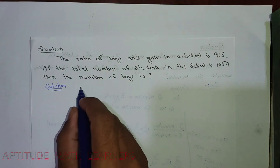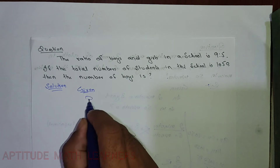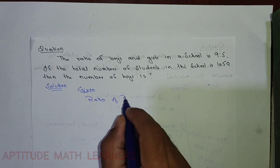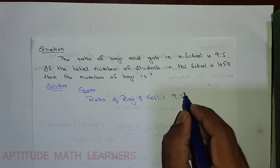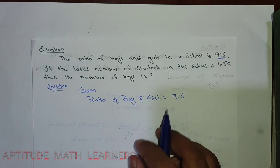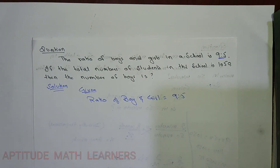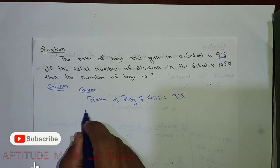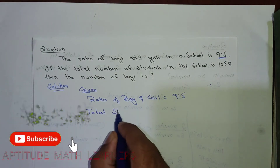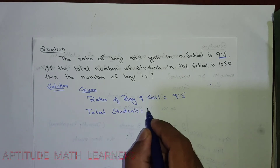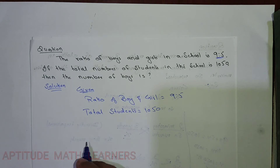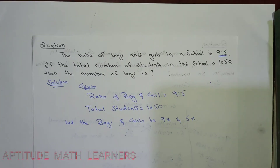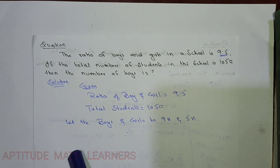So here is the given information. The ratio of boys and girls is 9:5. And the total number of students is 1050.